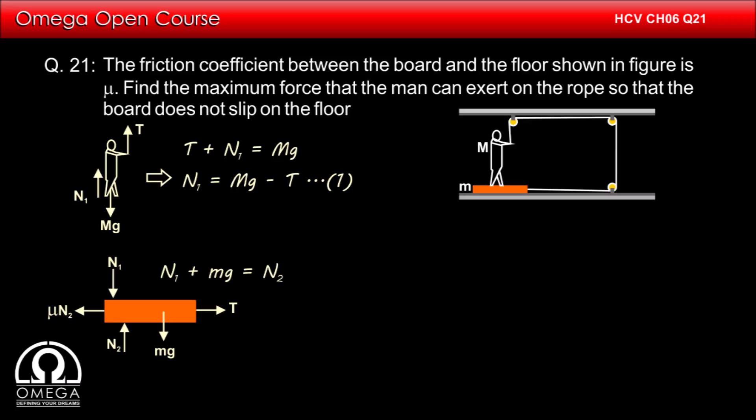Balancing the forces in vertical direction, we get N1 plus mg equals N2. Balancing the force in horizontal direction, we get T equals mu N2.